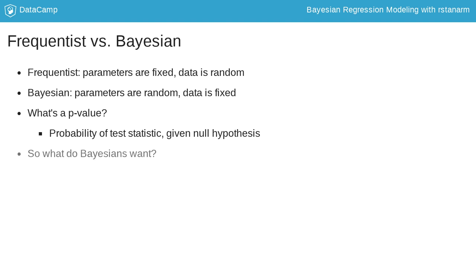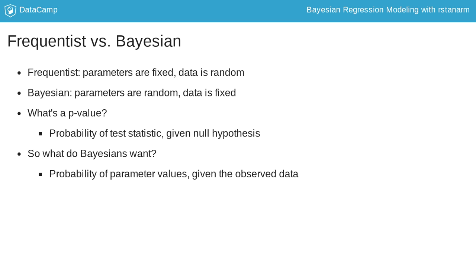In contrast, Bayesians assume that the data collected are fixed, and there instead is a distribution of possible parameter values that give rise to the data. Said another way, Bayesians are interested in determining the range of values for parameters that would give rise to their observed data set.